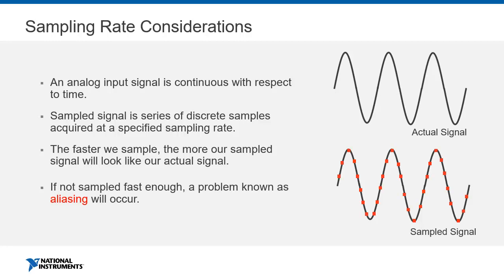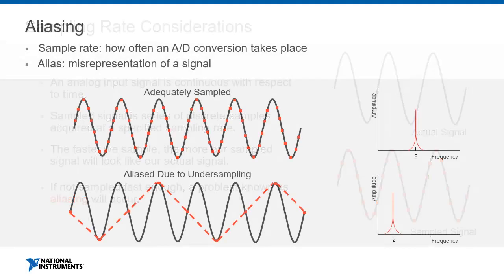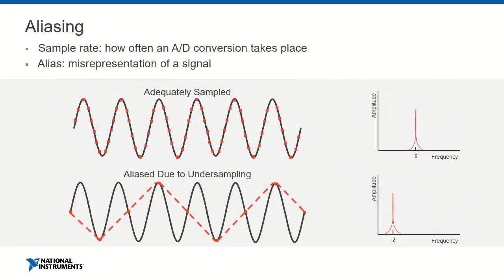If we don't sample fast enough, we will experience a problem known as aliasing. The sampling rate is the rate at which we acquire samples and perform the analog-to-digital conversion. As you can see in the top graph, our signal is adequately sampled — we can see its shape and frequency. But when a signal is not adequately sampled and the sample rate is too low, aliasing can occur, misrepresenting the frequency. In the bottom graph, taking only four to six total data points makes it look like a triangle wave instead of the sine wave we should be sampling.